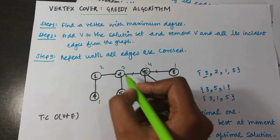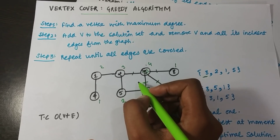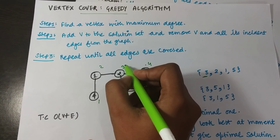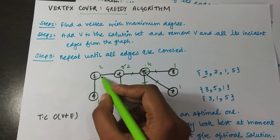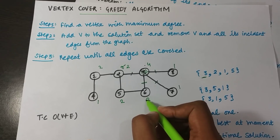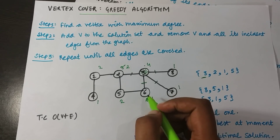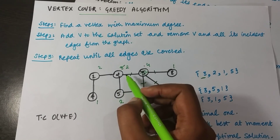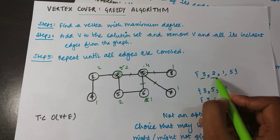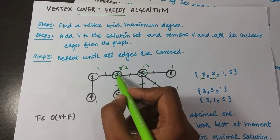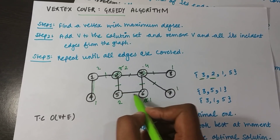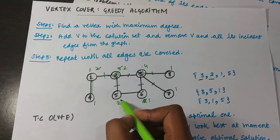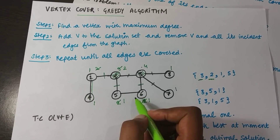After removing vertex 3's edges, I'm left with a smaller graph. The degrees are updated: vertex 2 drops from 3 to 2, and some others change as well. Now three vertices share the maximum degree of 2, so I can choose any one — I choose vertex 2. The two edges associated with vertex 2 are removed, leaving two disconnected edges.